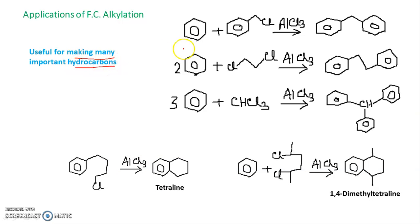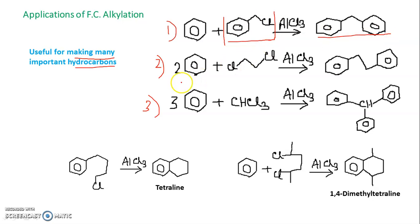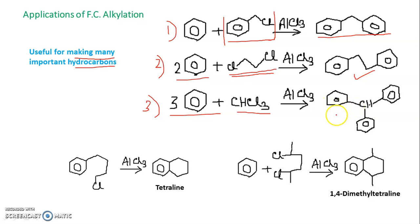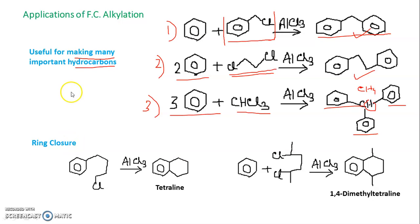Friedel-Crafts alkylation is useful for making many important hydrocarbons. Using benzene with benzyl chloride gives diphenylmethane. Using a dichloride (with Cl on both sides) reacts with two equivalents of benzene to give a bis-phenyl product. Using CHCl3 with three equivalents of benzene — three successive Friedel-Crafts alkylations — gives triphenylmethane, which is a methane derivative where three of the four hydrogens are replaced by phenyl groups.